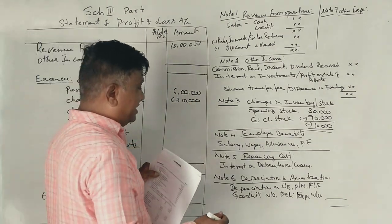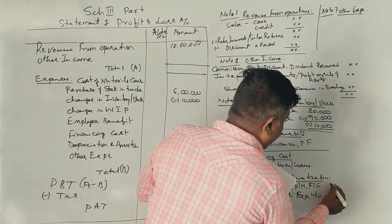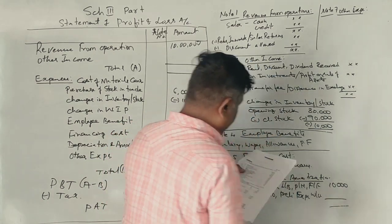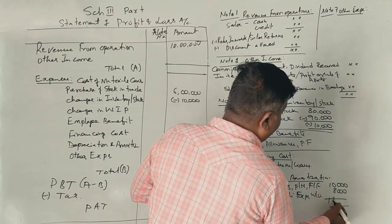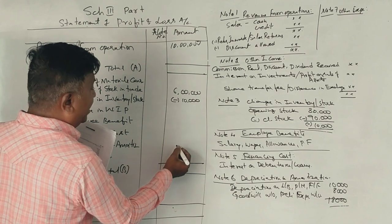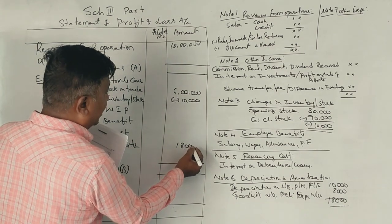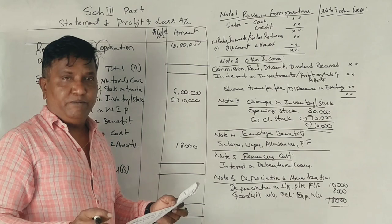Next, depreciation on fixed asset. Depreciation on fixed asset, 10,000. Note number 10,000 is equal. Benefits of employees.